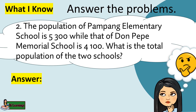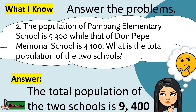Problem 2: The population of Pampang Elementary School is 5,300 while that of Don Pepe Memorial School is 4,100. What is the total population of the two schools? The total population of the two schools is 9,400.